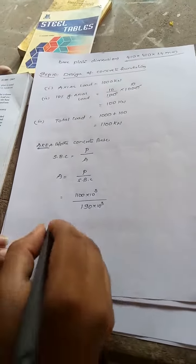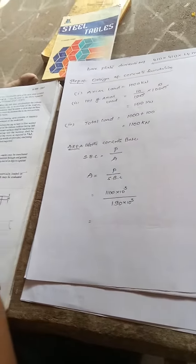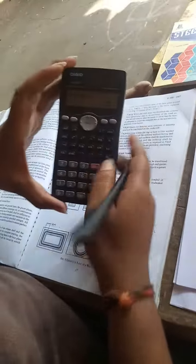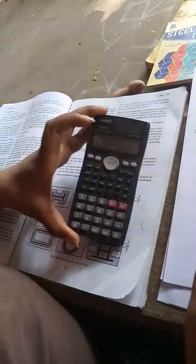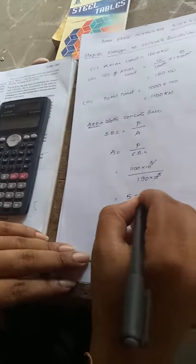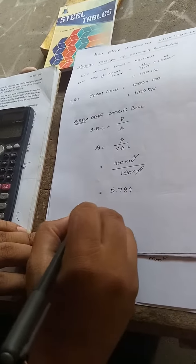kN per square meter. Then 1100 by, these are the cancellation values, 190, so 5.789. Again, same procedure: area equal to B